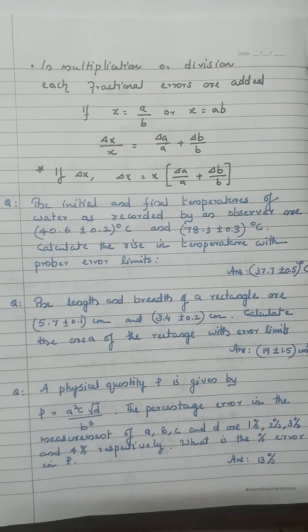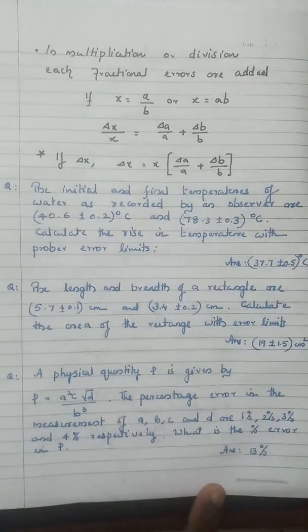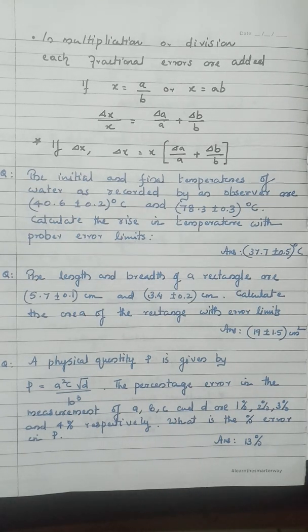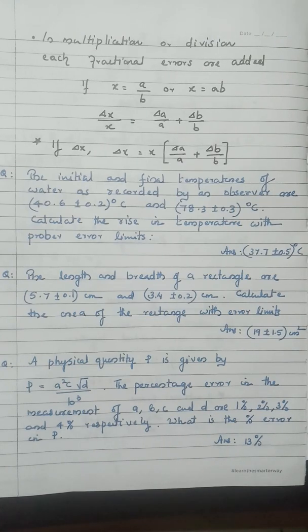Next example: the length and breadth of a rectangle are 5.7 ± 0.1 cm and 3.4 ± 0.2 cm. Calculate the area with error limits. Since area A = l × b is a multiplication, the fractional errors are added together, from which you can find the mean absolute error of area.